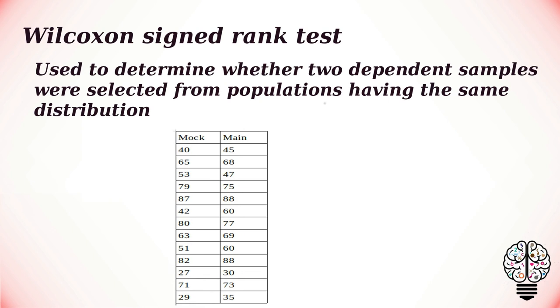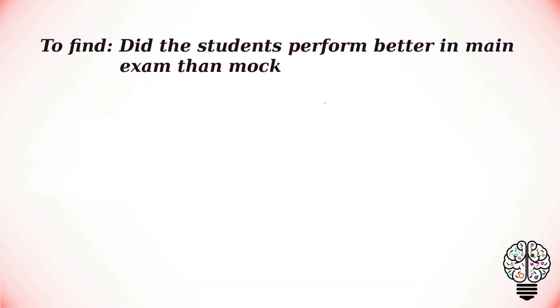Let us now take a look at an example to understand Wilcoxon signed rank test. The marks obtained in both the mock examination and the main examination by a random sample of 13 students are given below. We are going to test at 5% significance level to determine whether the students performed better in the main exam than in the mock exam. H₀ or our null hypothesis is equal to zero and Hₐ or our alternative hypothesis is greater than zero.